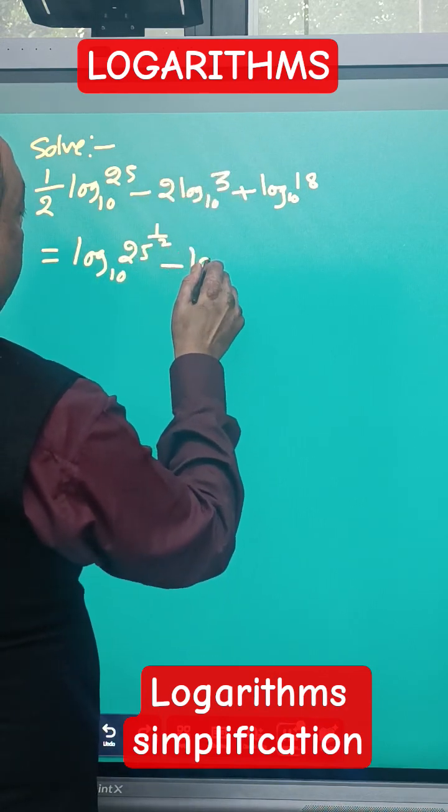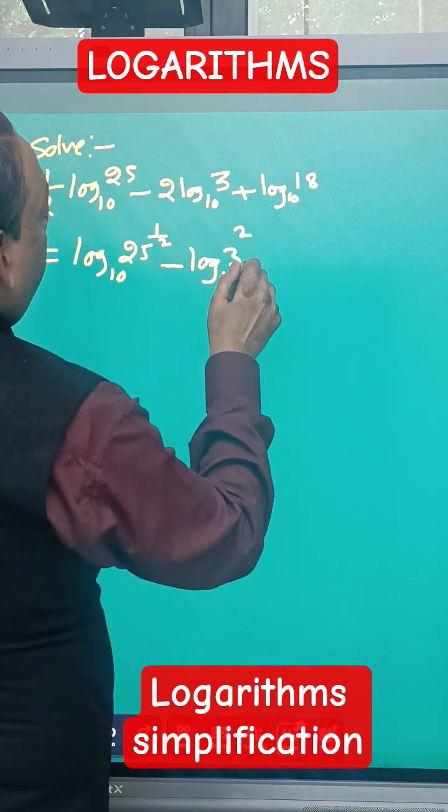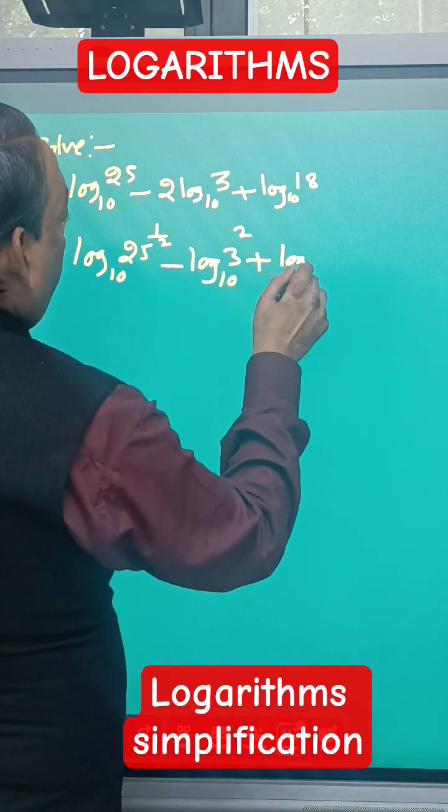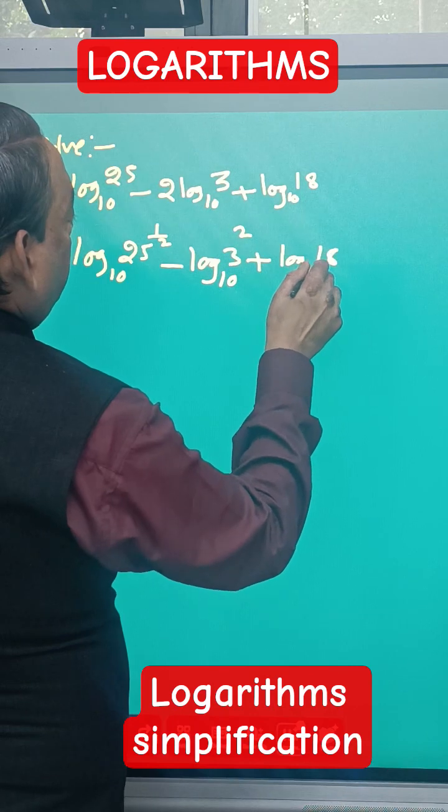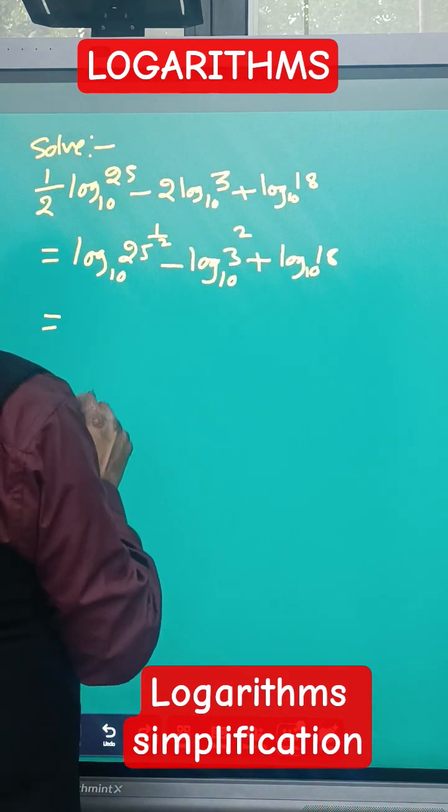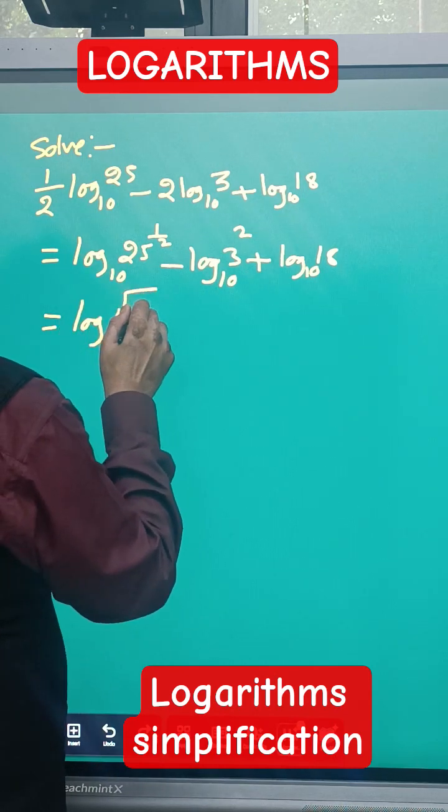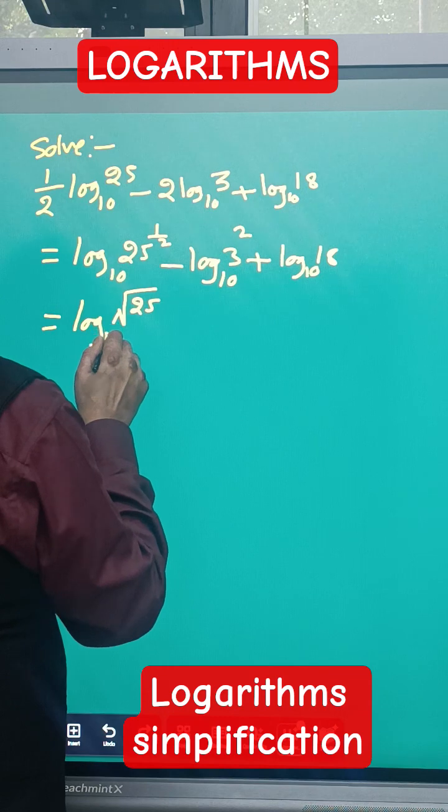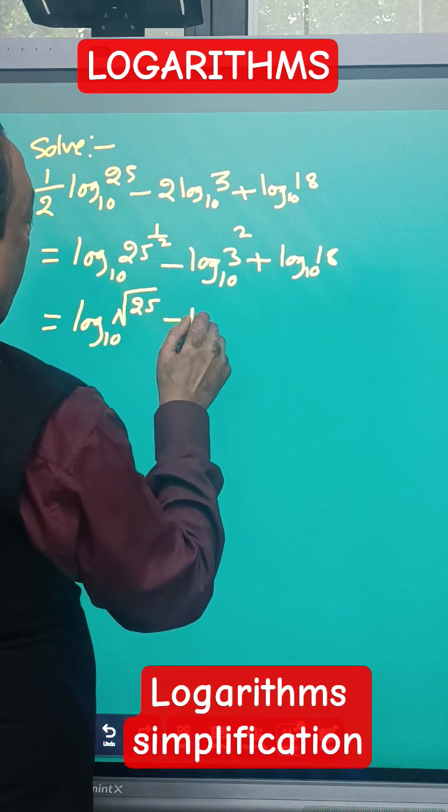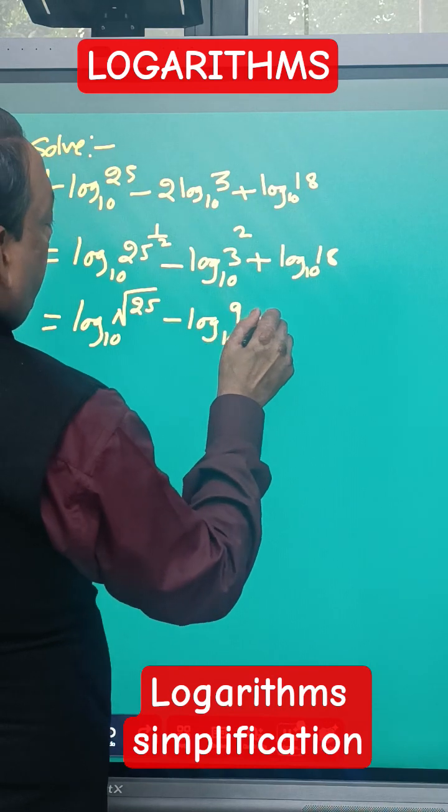Plus log 18 to the base 10. Now this becomes anything raised to 1/2 meaning the square root of that, so log root 25 to the base 10 minus log 3 square becomes 9 to the base 10 and plus log 18 to the base 10.